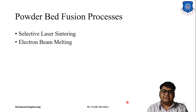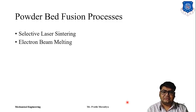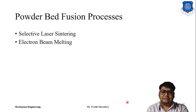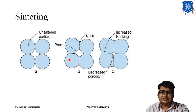In powder-based fusion processes, the raw material will be in powder form. There are two methods available: one is selective laser sintering and another is electron beam melting. We will discuss selective laser sintering in this session and electron beam melting in the next session.